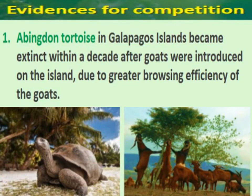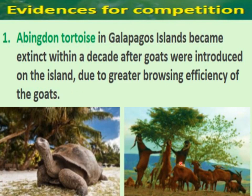Here are some evidences for competition in nature. The Abingdon tortoise in the Galapagos Islands became extinct within a decade after goats were introduced on the island. Due to the greater browsing efficiency of the goats, the goats were the dominant species. That's why the inferior species — the tortoise — got extinct due to the presence of this superior species.